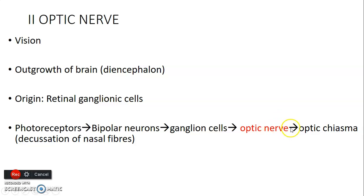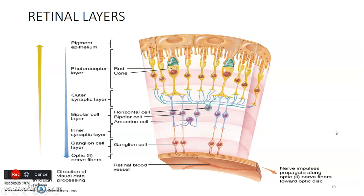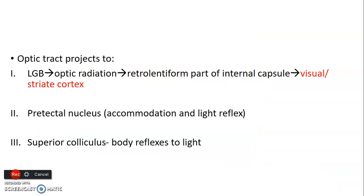From the optic nerve, the fibers from the inner or nasal portion will decussate and form the optic chiasma. These three neurons synapse and transmit signals within the retina: light reaches the photoreceptors, photoreceptors synapse with bipolar neurons, bipolar with ganglion cells, and the ganglion cells form the optic nerve.